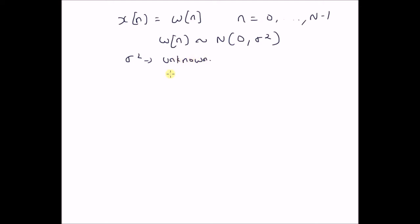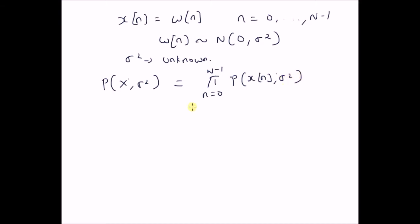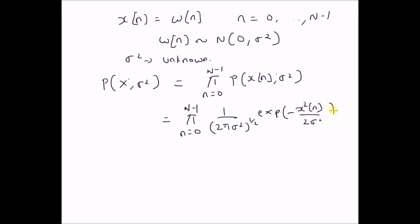So, first let us look at the maximum likelihood estimator for the unknown parameter σ². The probability distribution of the observations with the unknown parameter σ² is the product from n=0 to N−1 of p(x(n); σ²), which equals the product from n=0 to N−1 of (2πσ²)^(−1/2) exp(−x²(n) / (2σ²)). The unknown parameter σ² can be determined by maximizing the log-likelihood function, that is the logarithm of the probability of the set of observations x with the unknown parameter σ².